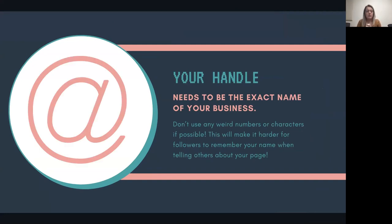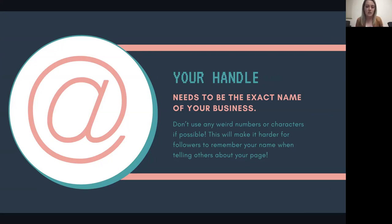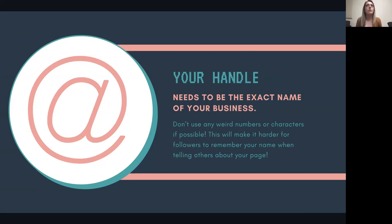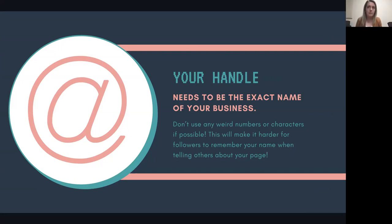So now that we've done a little tour of Instagram, let's talk about the algorithm and what you should be doing and how you should be doing it. The first thing is your handle. When you're choosing the handle for your business account, you need to make sure it's the exact name of your business — don't use any funny numbers or symbols. That makes it extremely difficult for a person who wants to follow you to find you on Instagram. Your handle needs to represent your business really well.